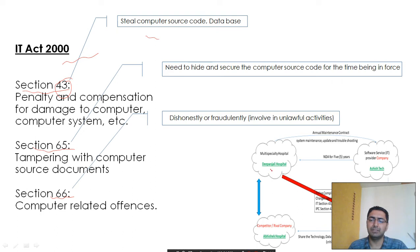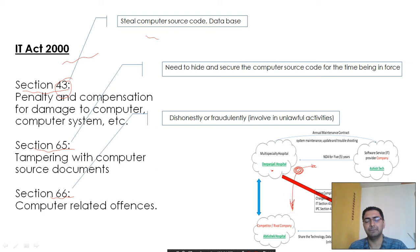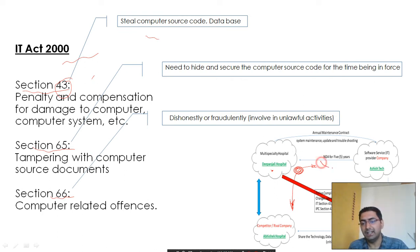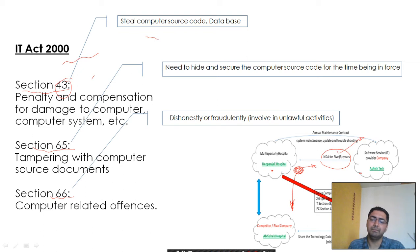While working with Ashish Tech, Mr. VJ came across the data which Dipanjali Hospital had shared with Ashish Tech. He stole that data and, based on it, provided this data to Abhishek Hospital. Therefore, Section 43 of the IT Act is applicable to him.